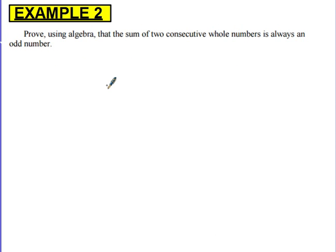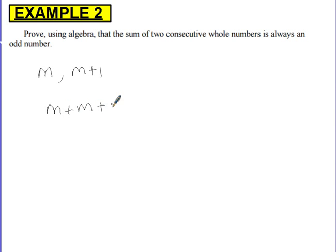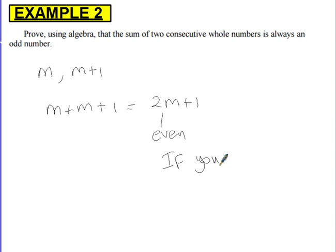Example 2: Prove using algebra that the sum of two consecutive whole numbers is always an odd number. We're looking at consecutive whole numbers, so let's say m and m plus 1. We're talking about their sum, so we add them together. The sum is 2m plus 1. This is clearly a multiple of 2 — so that part is even — and if you add 1 to an even number, you get an odd number.